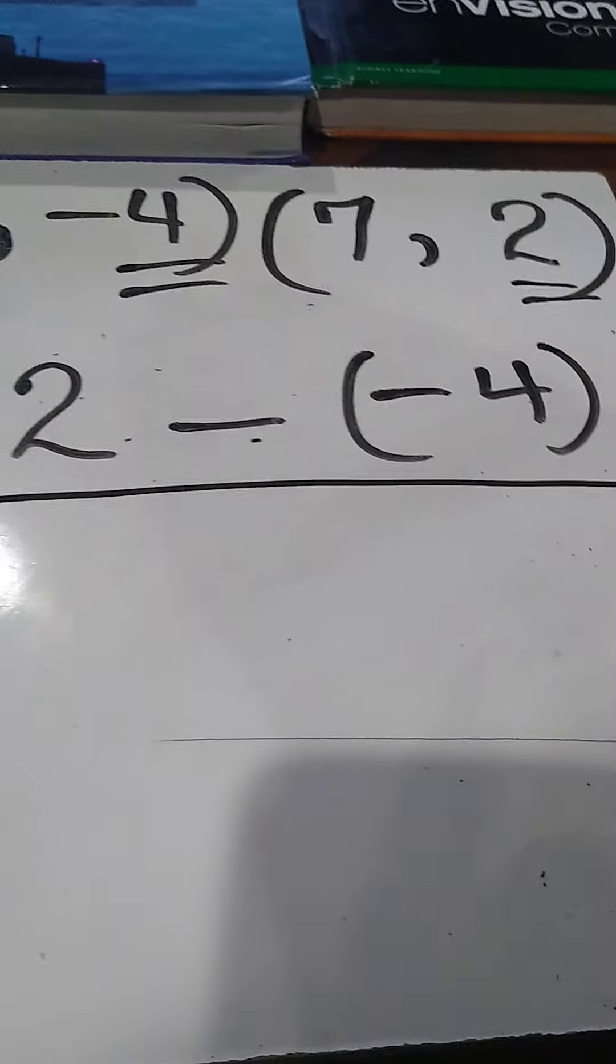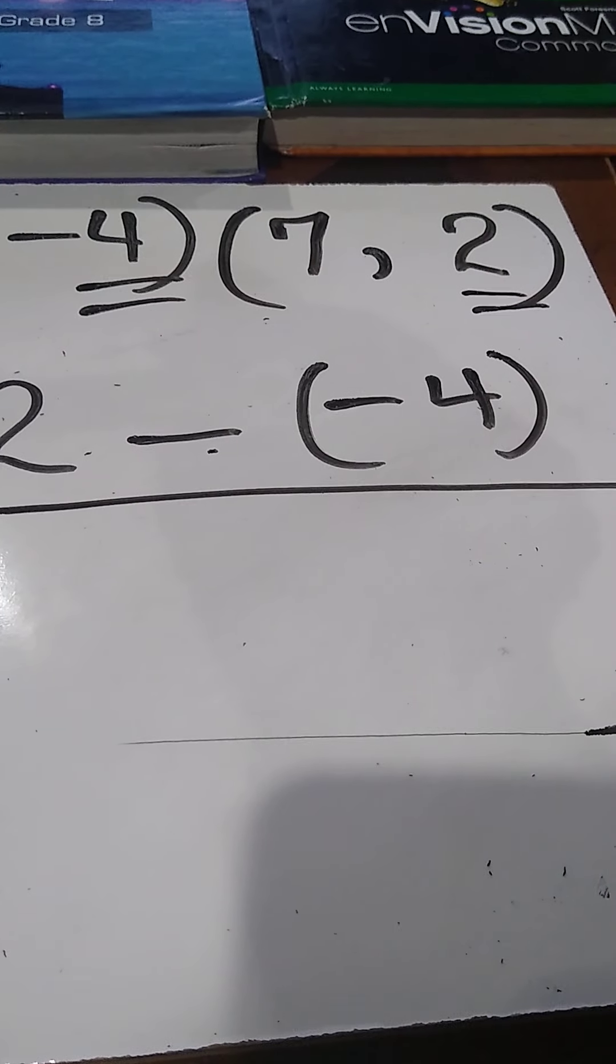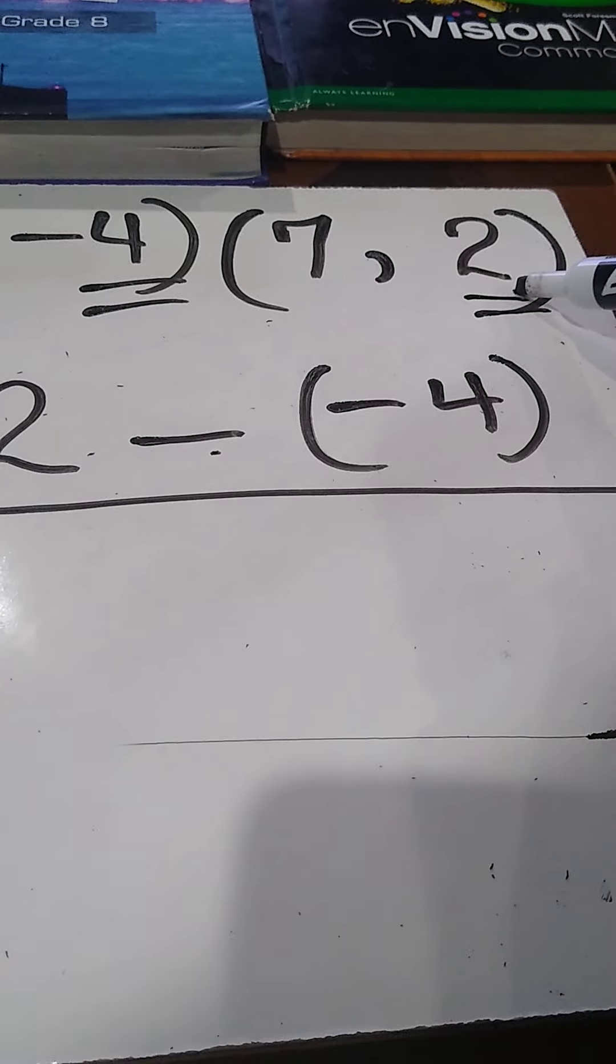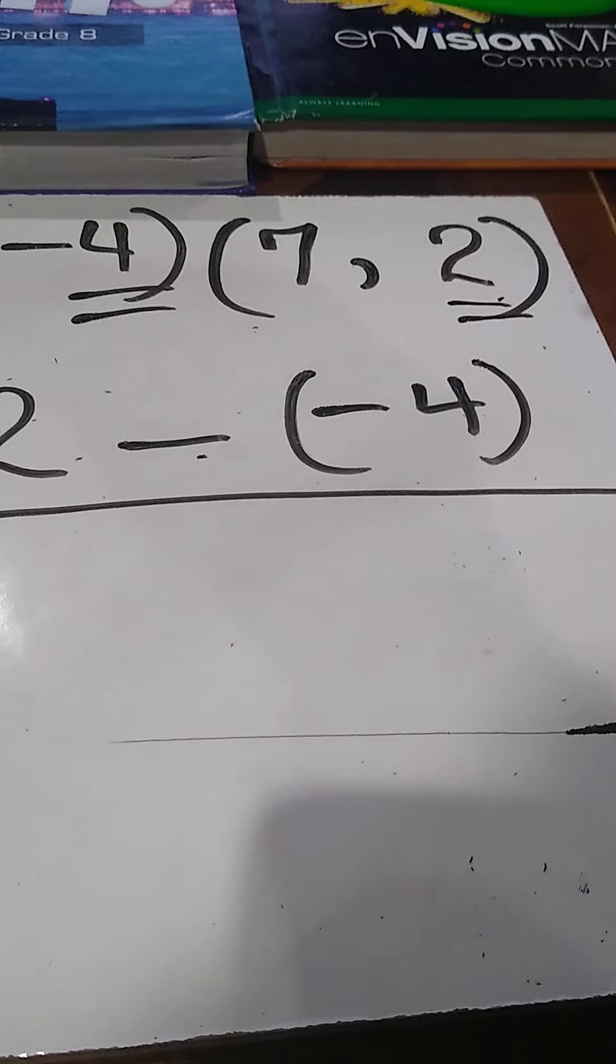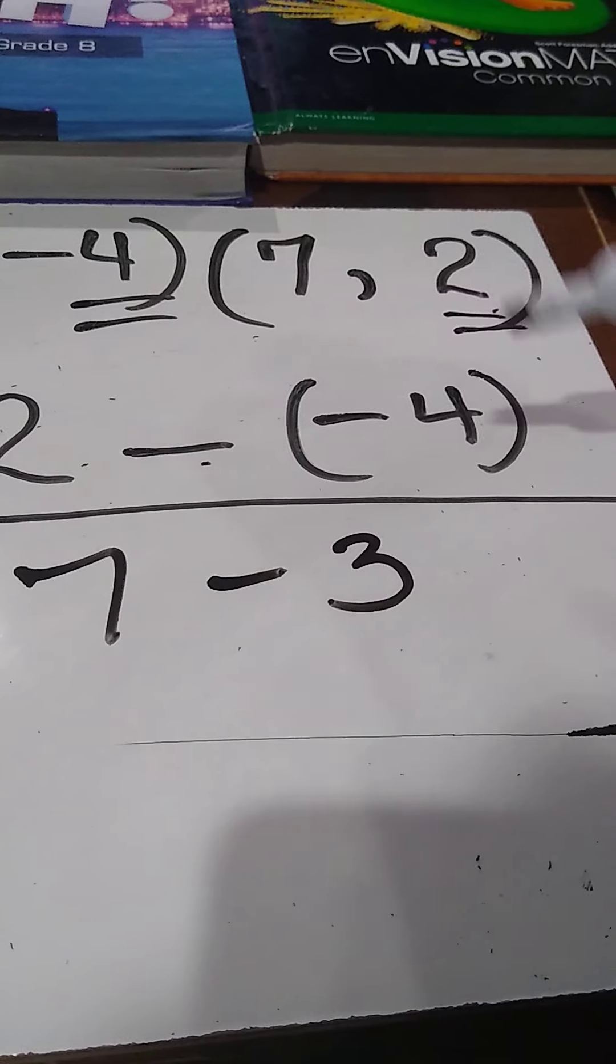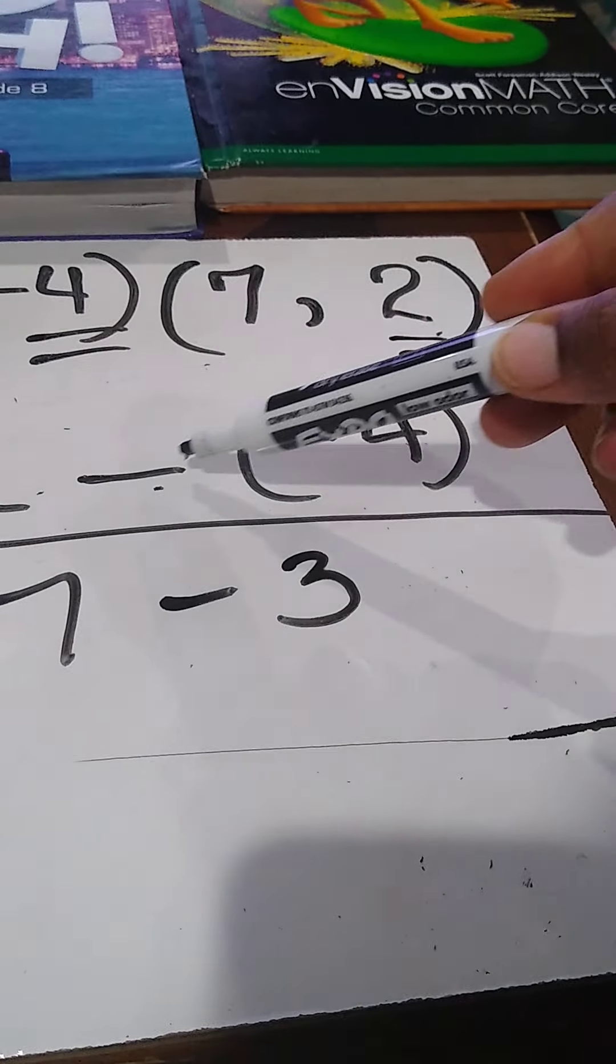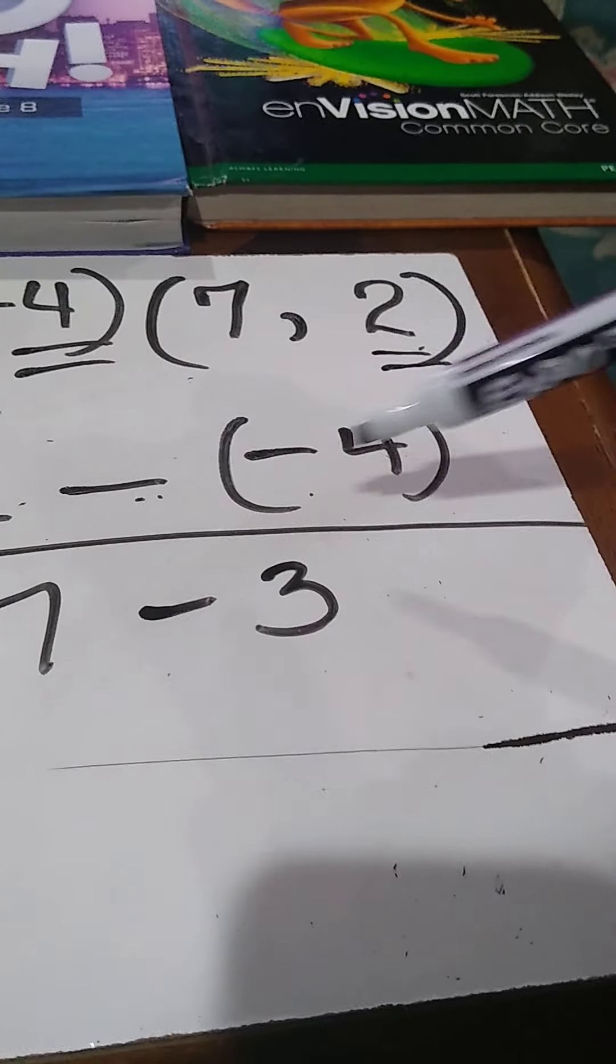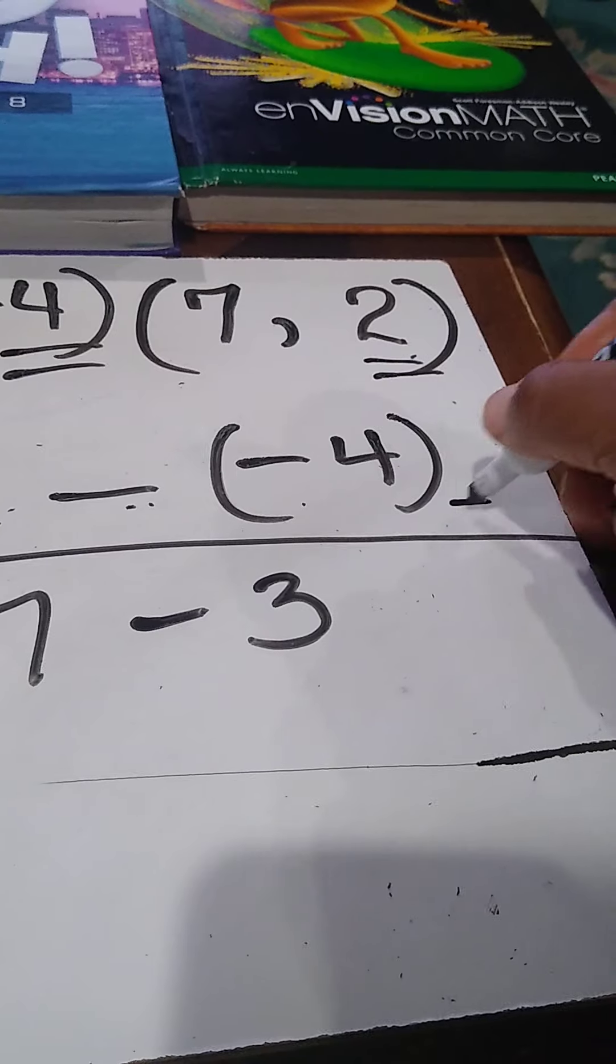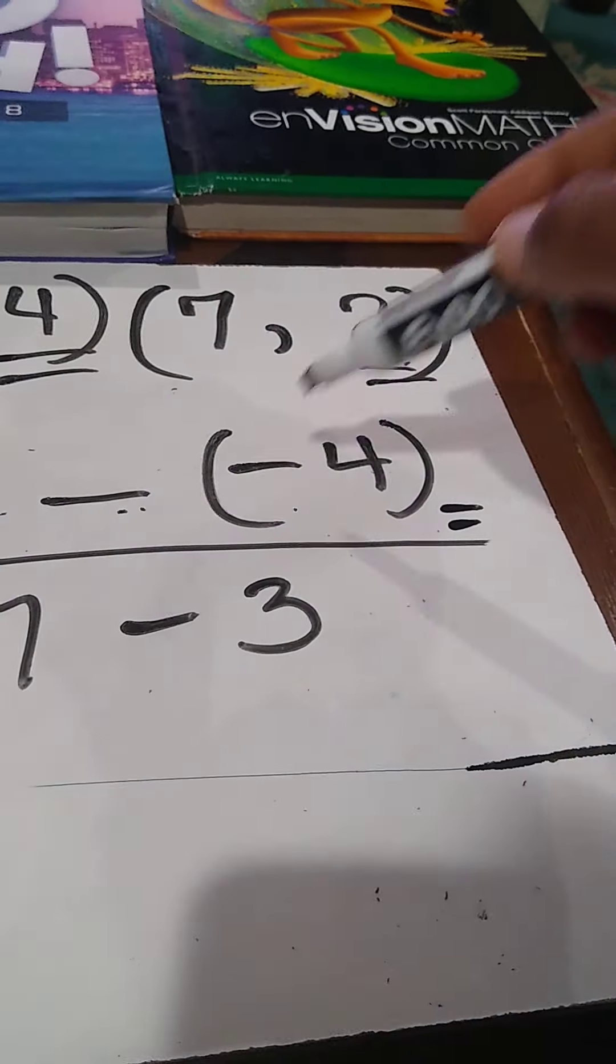Then we divide by 7. We started with 2 for y, so we start with 7 for x. It becomes 7 take away 3. As a reminder, we're subtracting a negative. Whenever we subtract a negative, it's the same as adding. So 2 minus negative 4...